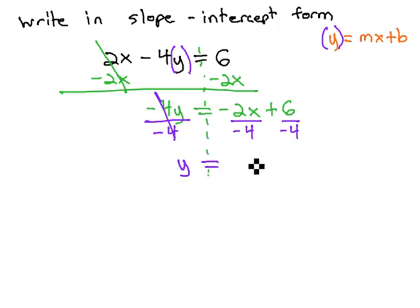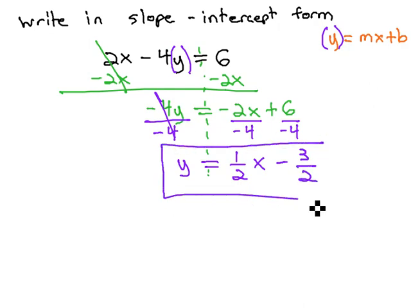The y is now alone. Negative 2 over negative 4 reduces to 1 half x, and 6 over negative 4 reduces to negative 3 halves. Our equation is now in slope-intercept form. We can see that the slope is 1 half and the y-intercept is negative 3 halves.